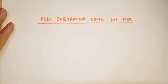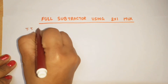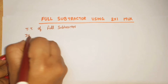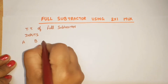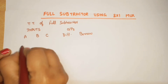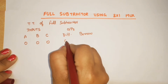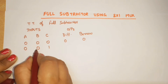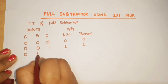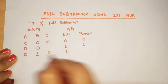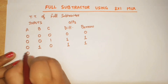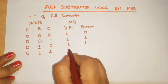First of all I will draw the truth table of the full subtractor. The inputs are A, B, C and two outputs: first output is difference, second output is borrow. First combination: 0 0 0 — difference 0, borrow 0. Next: 0 0 1 — 0 minus 1 is 1, borrow is high. Next: 0 1 0 — 0 minus 1 is 1, borrow is 1. Next: 0 1 1 — difference 1, borrow 1, then 1 minus 1 gives 0.